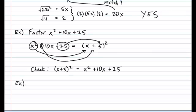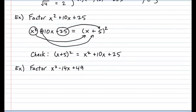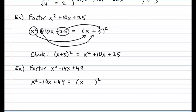Another example: factor x² − 14x + 49. Going through the detection process, this is a perfect square trinomial. So: x² − 14x + 49 equals a binomial squared. √(x²) = x, √49 = 7, and you take the sign of the middle term — minus. The answer is (x − 7)². Very fast.